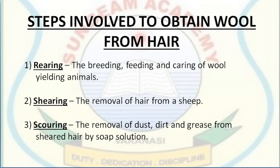The third step is scouring — the process of removing dust, dirt and grease from sheared hair using a soap solution. The sheared hair is moved to tubs filled with soapy water, and then passed through a series of rollers and dryers to make them straight and dry.